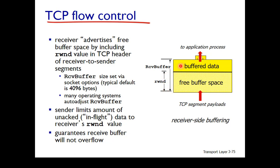If there is some amount of buffered data, then the receiver will advertise a receive window where that is the receive buffer minus however much data is buffered. TCP will always make sure that the data it sends is less than or equal to that.